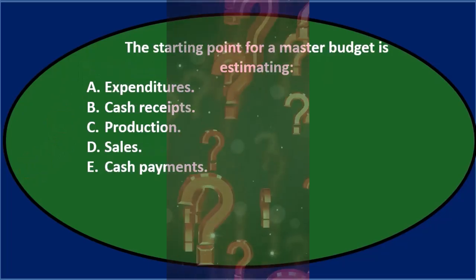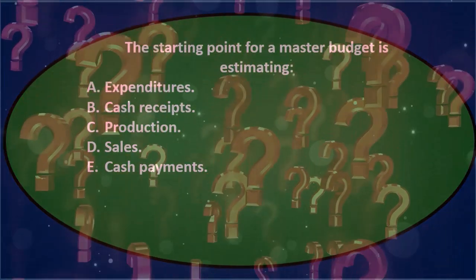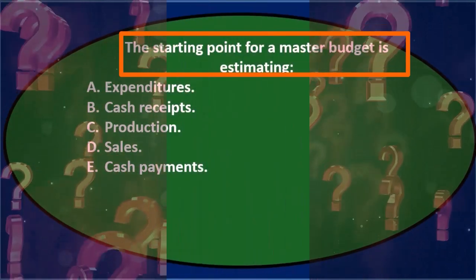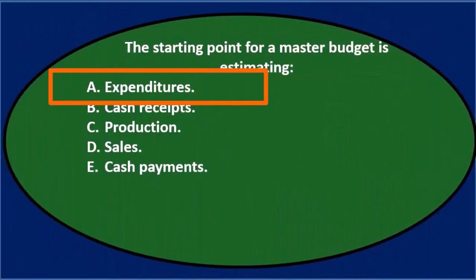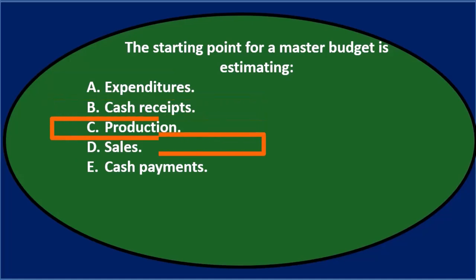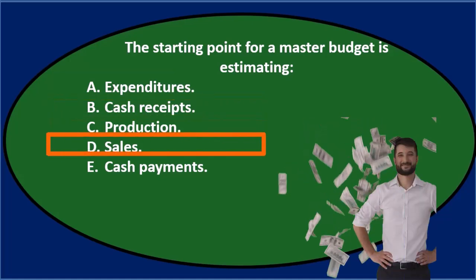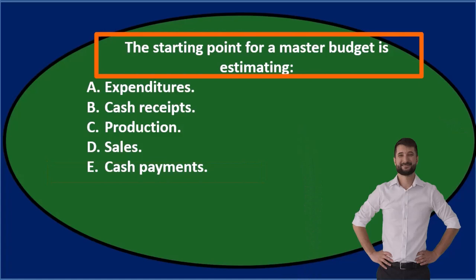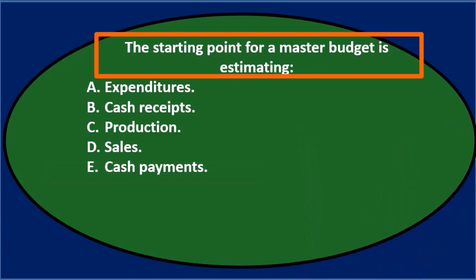The starting point for a master budget is estimating: A) expenditures, B) cash receipts, C) production, D) sales, or E) cash payments. Let's go through this using the process of elimination.